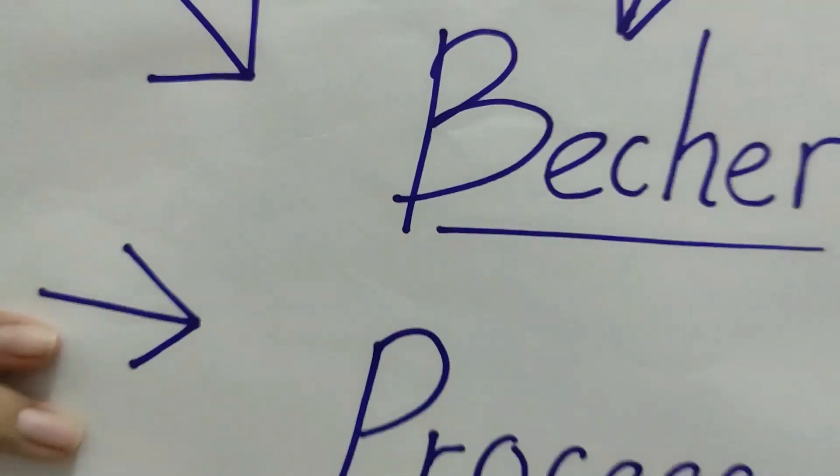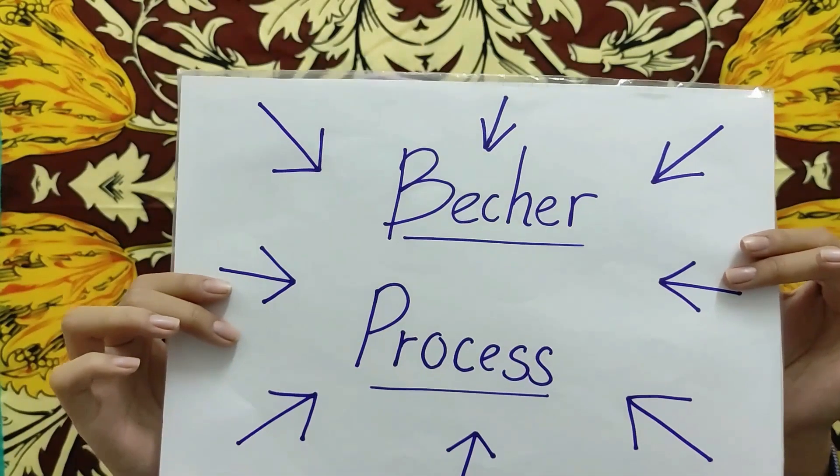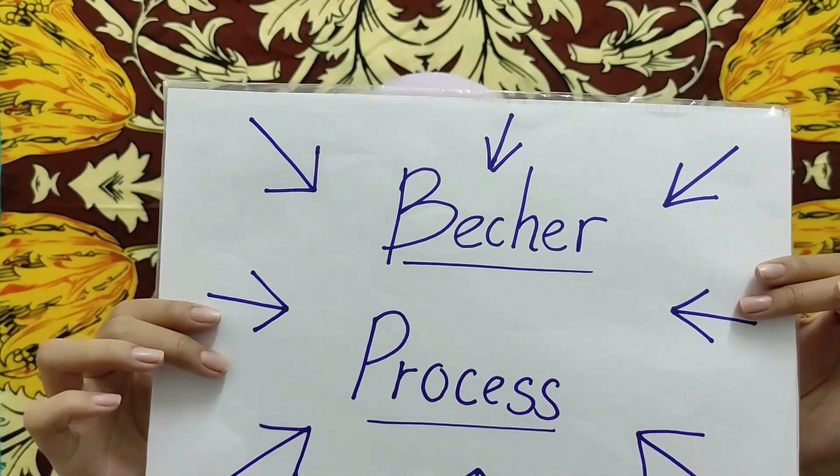To produce synthetic rutile, we need one industrial process — the Becher process. The Becher process involves an aqueous oxygen leaching step at near-neutral pH, and comprises three major steps.